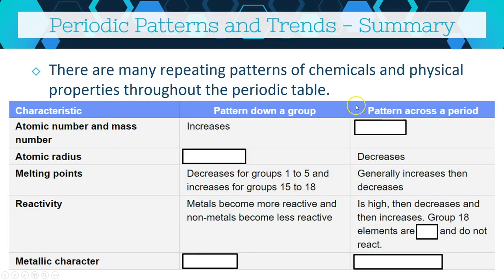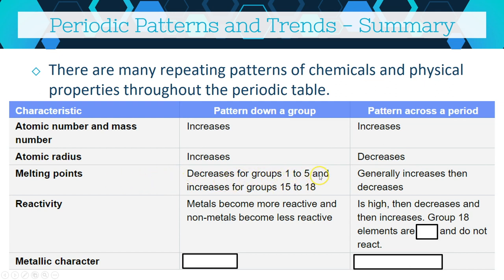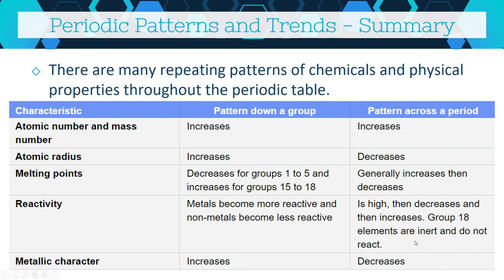Here's a summary of all the trends: Atomic number and mass increase going down a group and across a period. Atomic radius increases going down a group but decreases going across a period. Melting point decreases going down groups 1–15 but increases down groups 15–18; going across a period it generally increases then decreases. Metals become more reactive going down a group; non-metals become less reactive. Going across a period, reactivity starts high, decreases, increases again, then drops to zero at group 18. Metallic character increases going down a group and decreases going across a period.